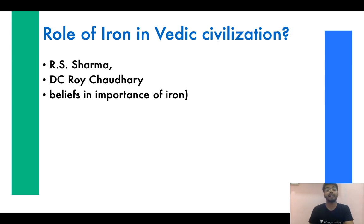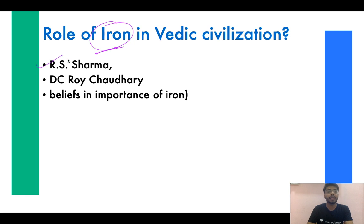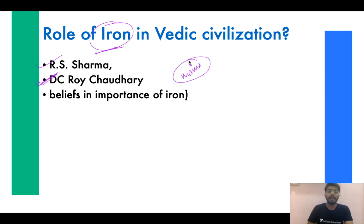Iron becomes very important — by the Later Vedic period, iron had been discovered and excavated, and people began using metallurgy. There are controversies around iron: RS Sharma related the coming of iron to agriculture and surplus production, while DC Raj Chaudhary related it to trade, commerce, and military power. We will try to understand these theories — this topic is important for mains.